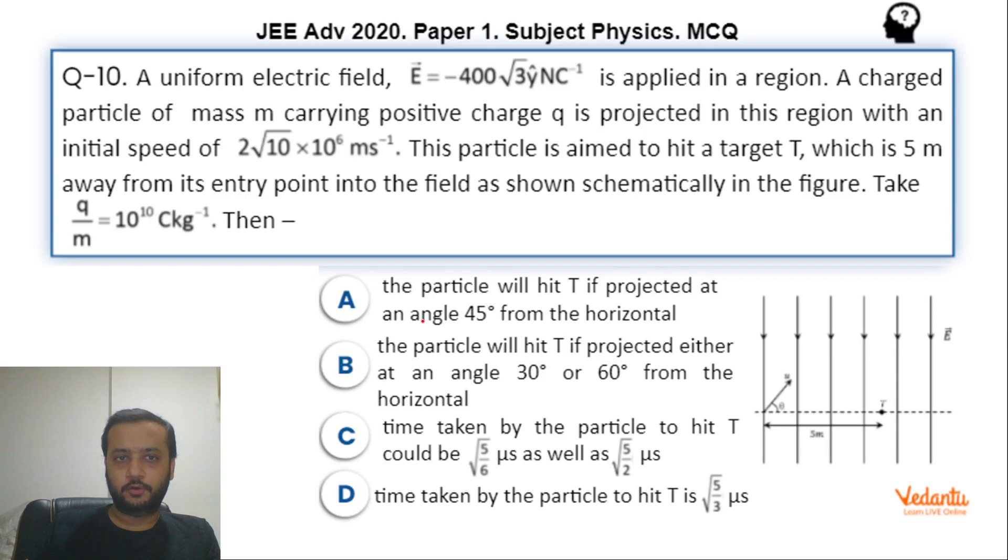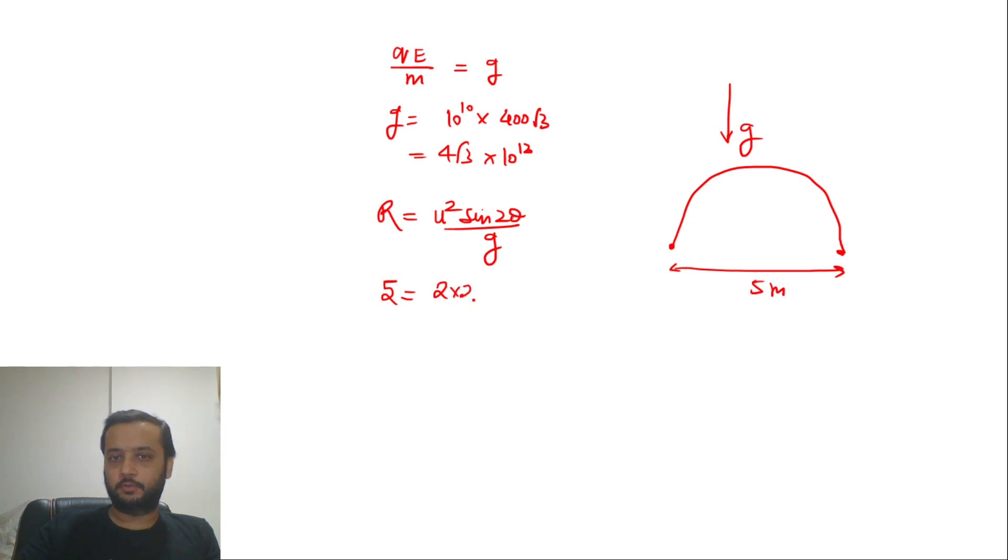Range ki value question me 5, u² ki value 2×10×10⁶, so 2×2×root10×root10 = 10×10¹² sin 2θ by gravity ki value jo humne nikali 4 root 3 into 10 to the power 12. Quite easy calculations: this cancels, 4 cancels, 5 into 5 is 2.